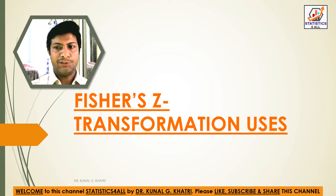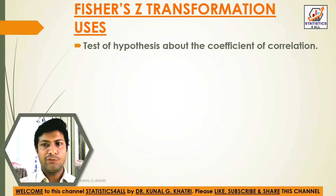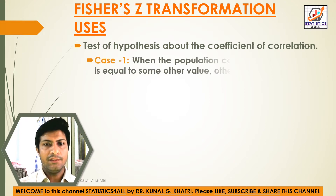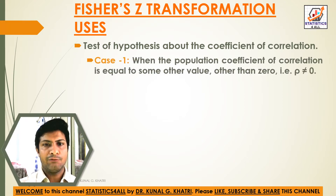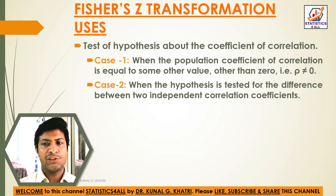Fisher's Z transformation uses: Test of hypothesis about the coefficient of correlation. Case 1: when the population coefficient of correlation is equal to some other value, i.e., other than 0 (rho not equal to 0). Case 2: when the hypothesis is tested for the difference between two independent correlation coefficients.